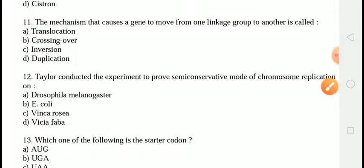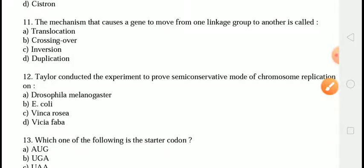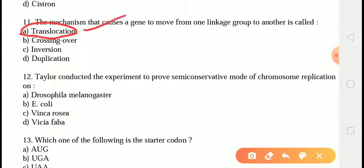The next question is: the mechanism that causes a gene to move from one linkage group to another is called? The correct answer is answer A, that is translocation. Translocation is basically the separation of chromosome segments and their union to a non-homologous chromosome.